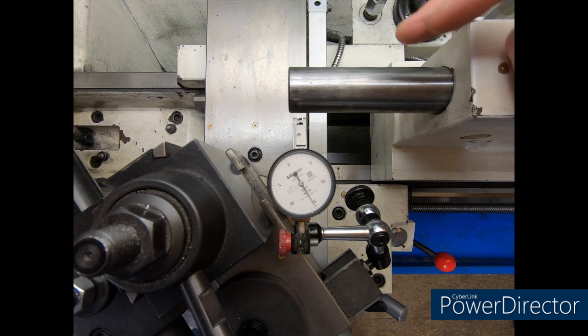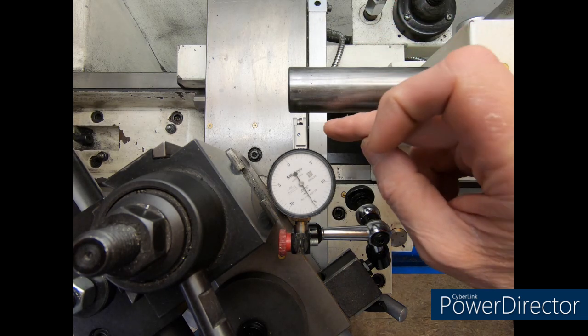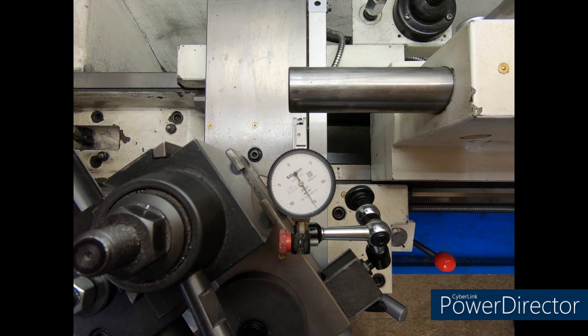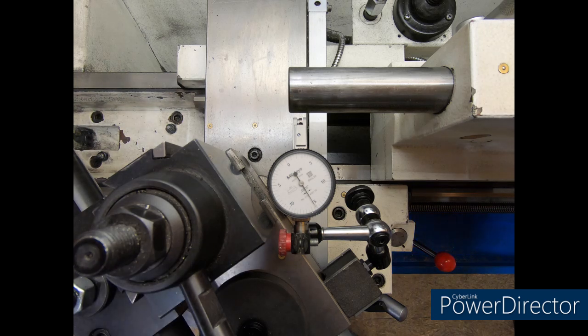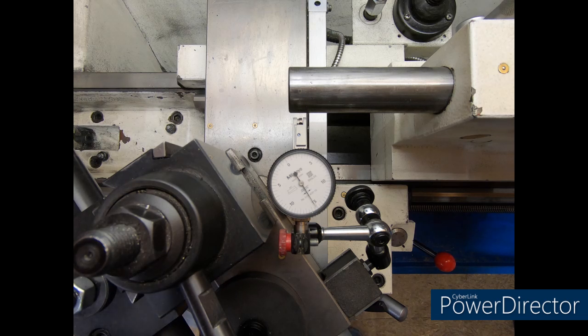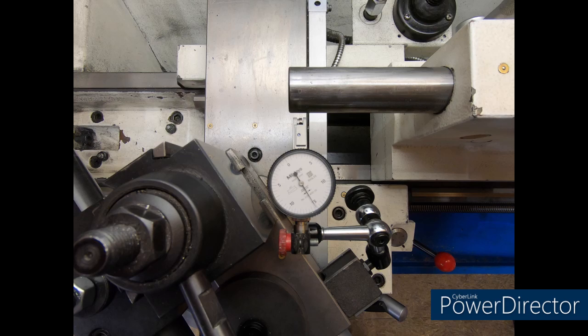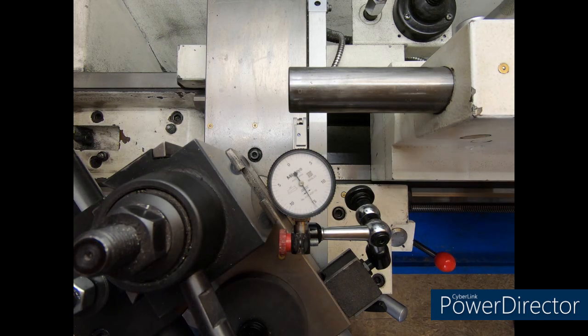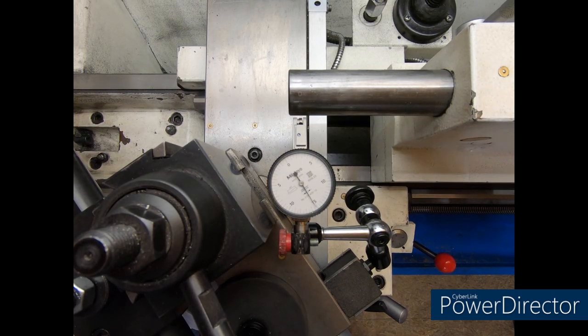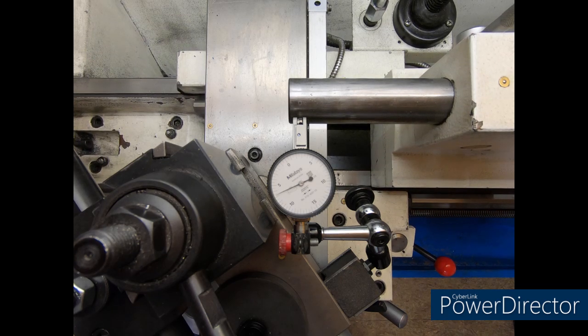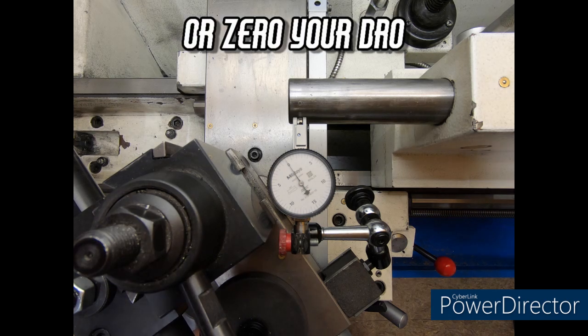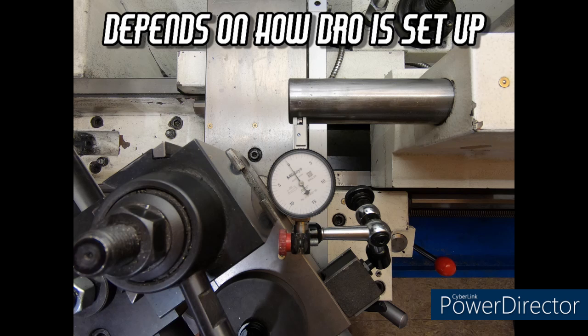We're going to use my tailstock quill because my quill is dead zero along the side. I have used round stock in the chuck to do this before—turn a piece of round stock down in the chuck, and once that's done it's literally centerline to the chuck. But we're going to use my tailstock quill for this one. At this point, we're going to run the cross slide in until we hit zero on the indicator. Okay, that's zero, and we're going to zero the hand wheel's dial.